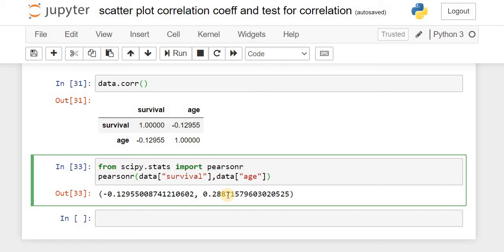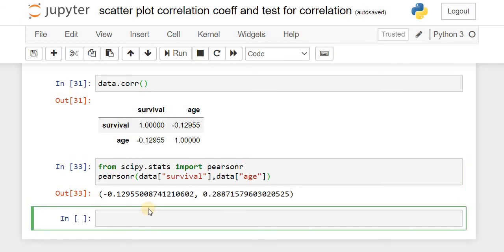To interpret this data, let us consider a hypothesis. The null hypothesis is the status quo where survival and age have no relationship. The alternative hypothesis is that there is a significant correlation between survival and age.